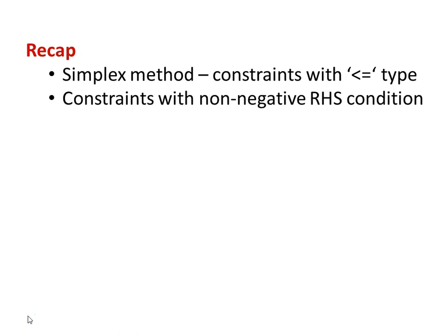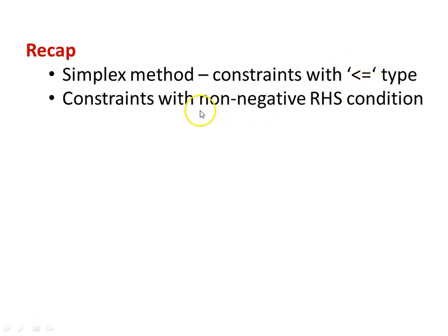In the simplex method, the requirement is all the constraints should be with less than or equal to symbol, and all the constraints with non-negative right hand side. So these two are required. If you have less than or equal to symbol, automatically the right hand side will be non-negative. When this condition is satisfied, we can solve the problem by the simplex method.